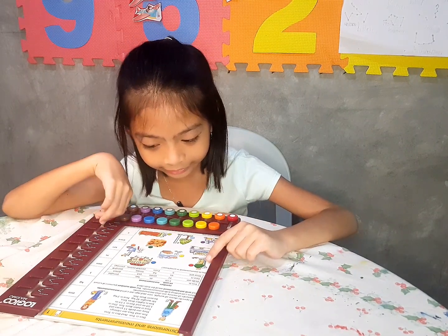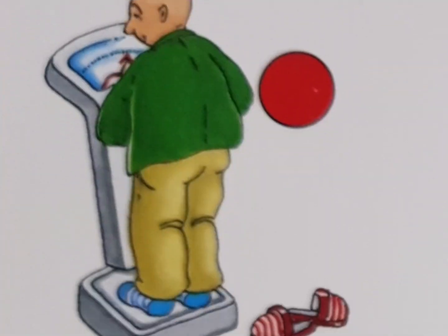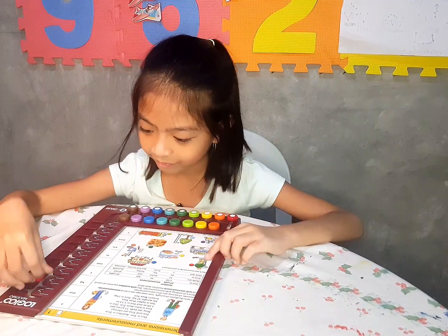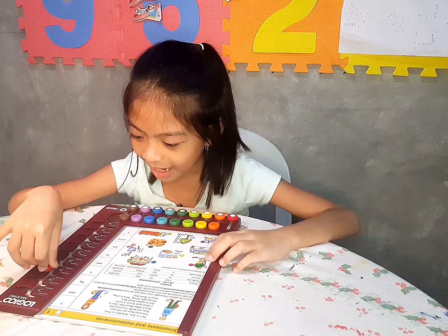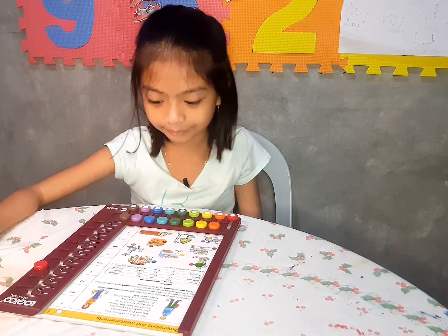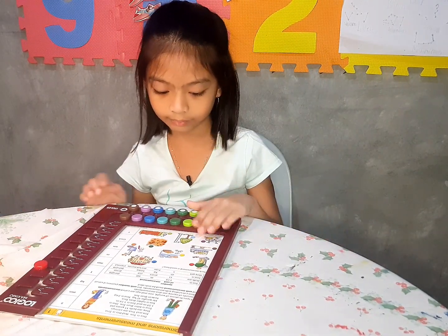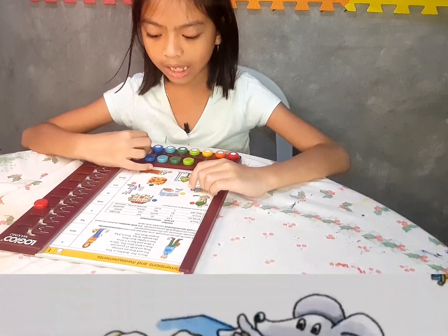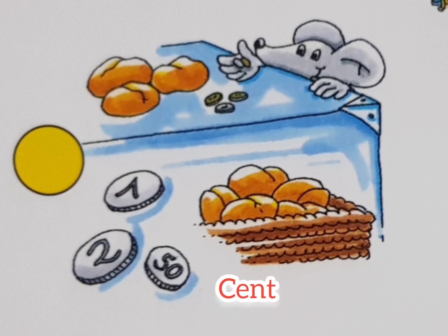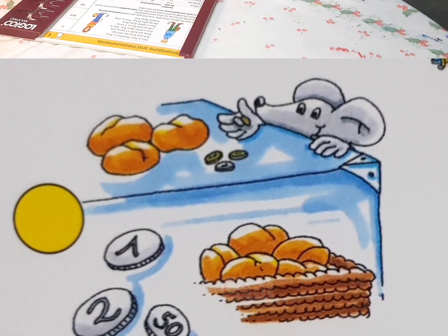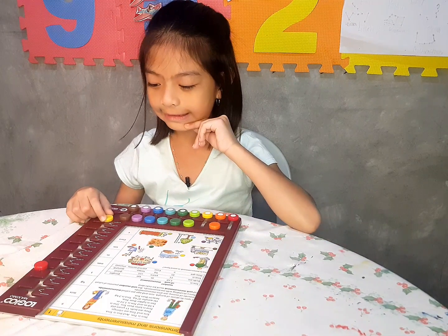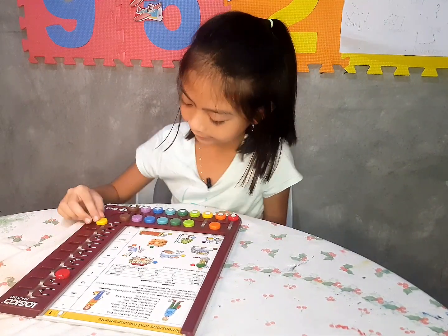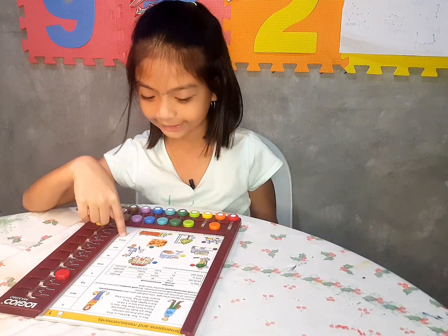He's checking how heavy he is. Maybe it's kilograms. Next one is yellow and it's buying some bread. I think it's cents.